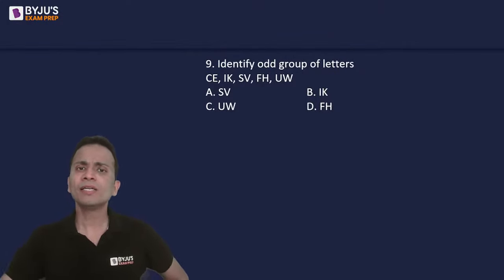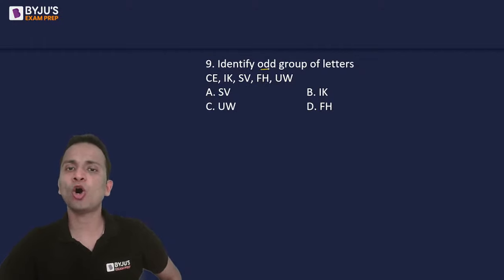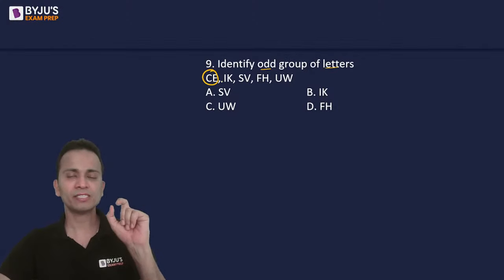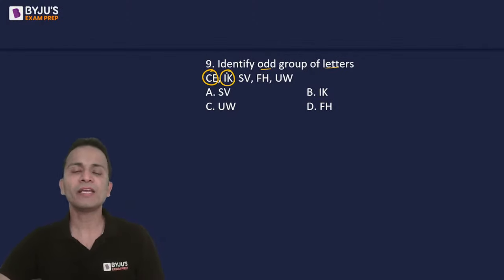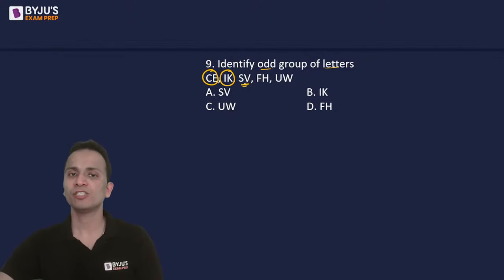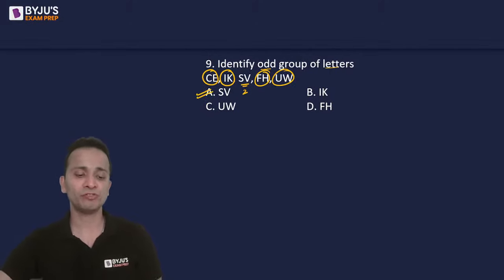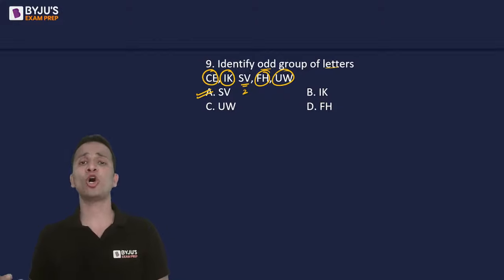Question number 9: identify the odd group of letters from CE, IK, SV, FH, UW. Between C and E there is one alphabet D; between I and K there is one alphabet J; between F and H there is one alphabet G; between U and W there is one alphabet V. But between S and V there are two alphabets T and U. Therefore SV is the odd one out.